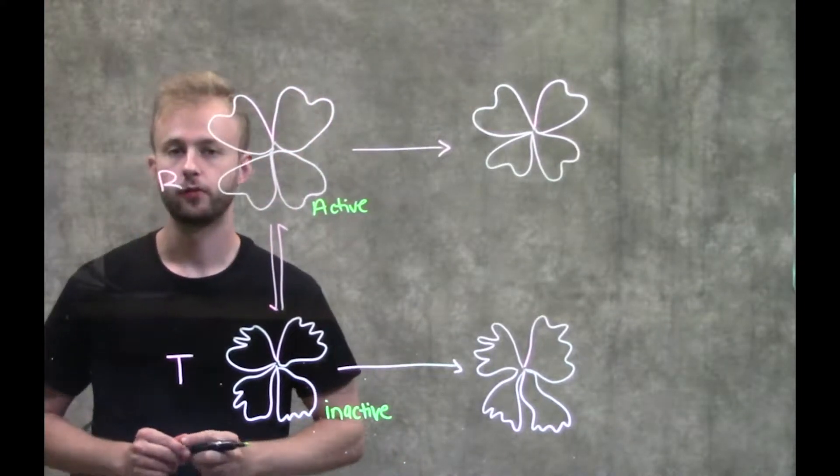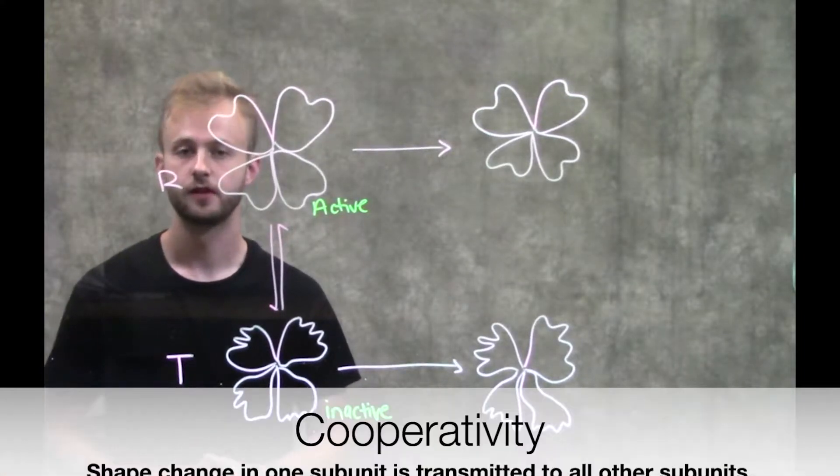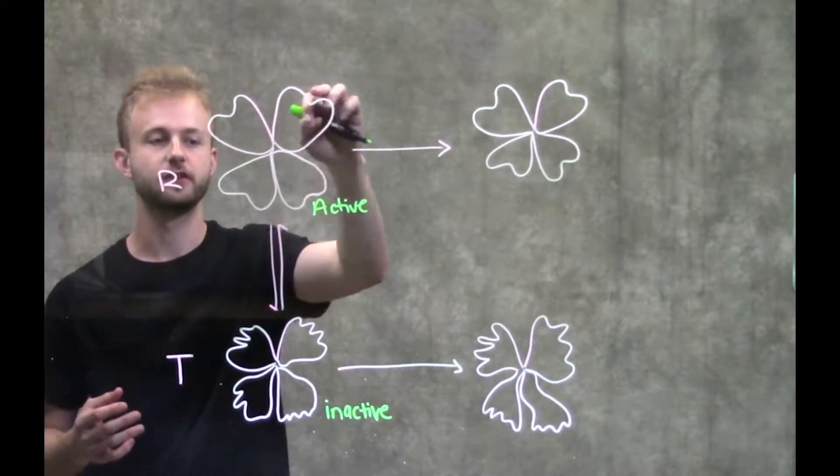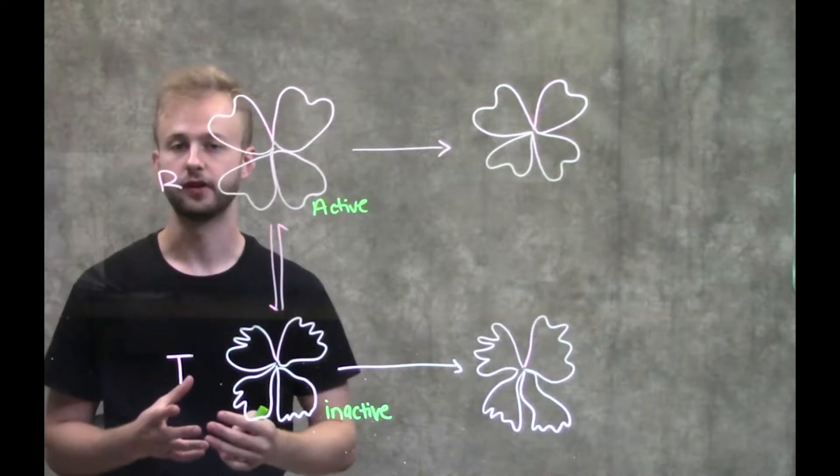Something that's really important with allosteric enzymes is the concept of cooperativity. Cooperativity is basically telling us that the active sites on the different subunits of this enzyme are all able to communicate with one another.